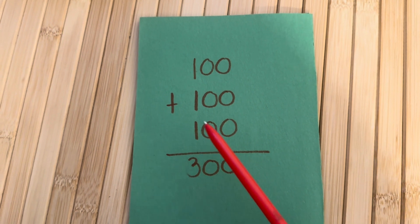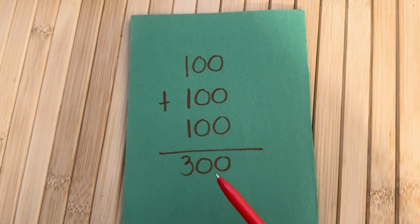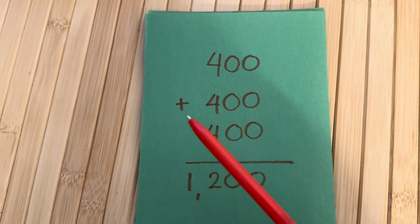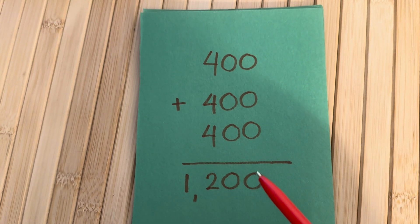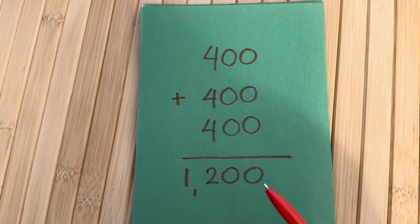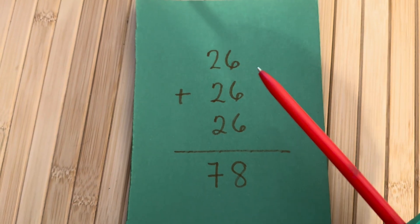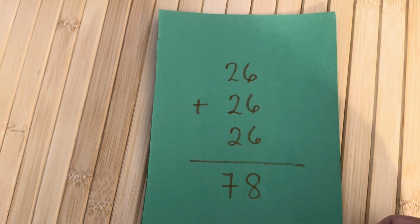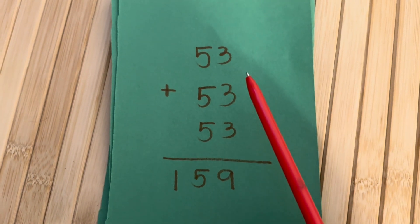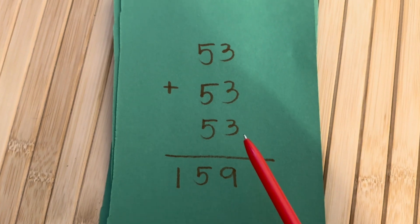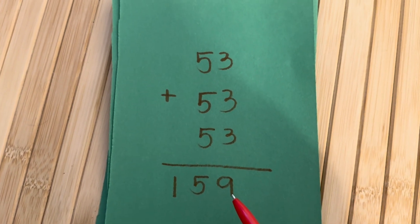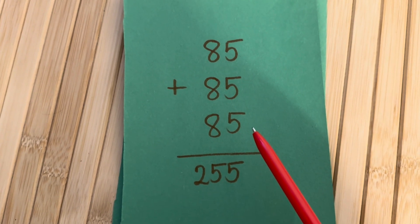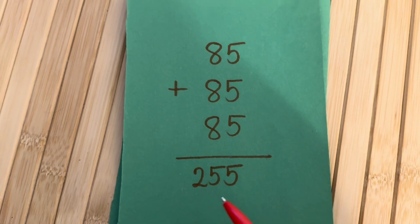Do a review. 100 plus 100 plus 100 is equals to 300. 400 plus 400 plus 400 is equals to 1,200. 26 plus 26 plus 26 is equals to 78. 53 plus 53 plus 53 is equals to 159. Next is 85 plus 85 plus 85 is equals to 255.